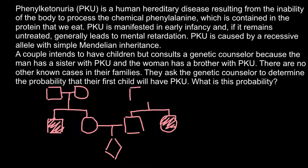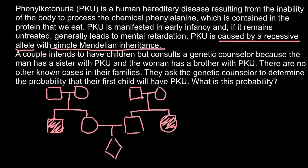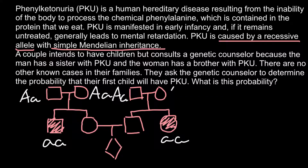Of course everyone here had parents, so here is a father and mother on each side. Since this genetic disorder is caused by a recessive allele with simple Mendelian inheritance, the people who are affected would have the genotype small-a small-a (aa). That means both parents of each affected sibling have to be heterozygous — phenotypically normal but carrying the recessive allele.